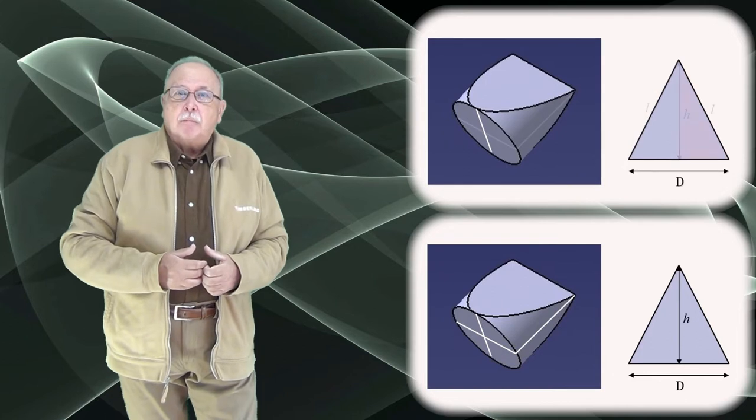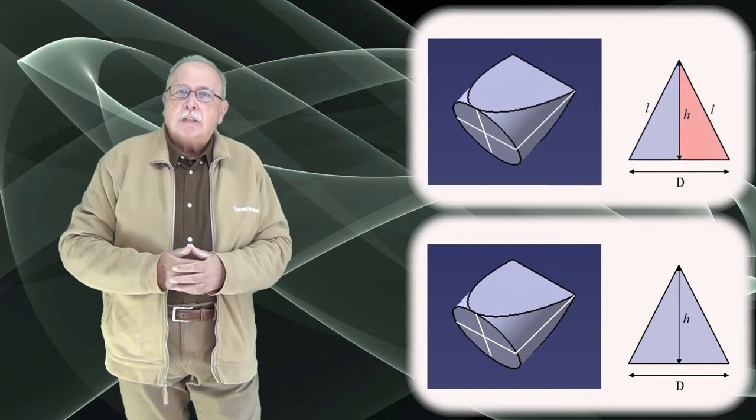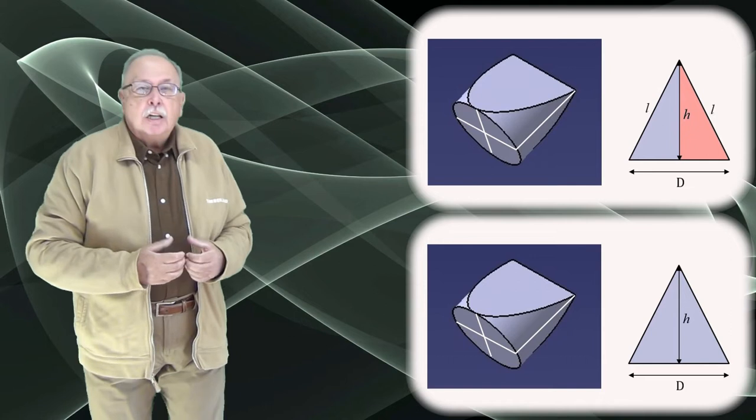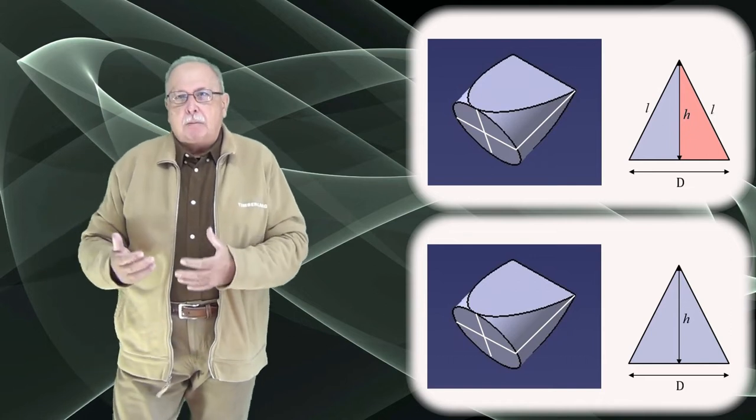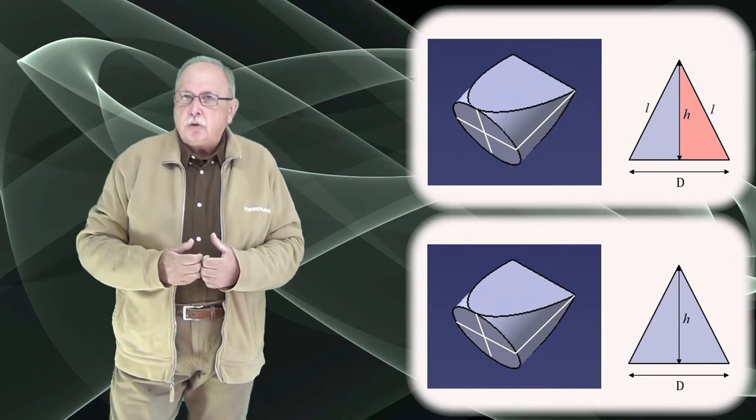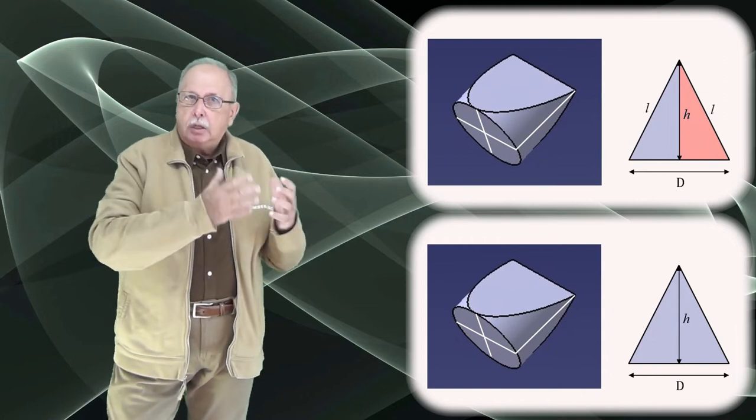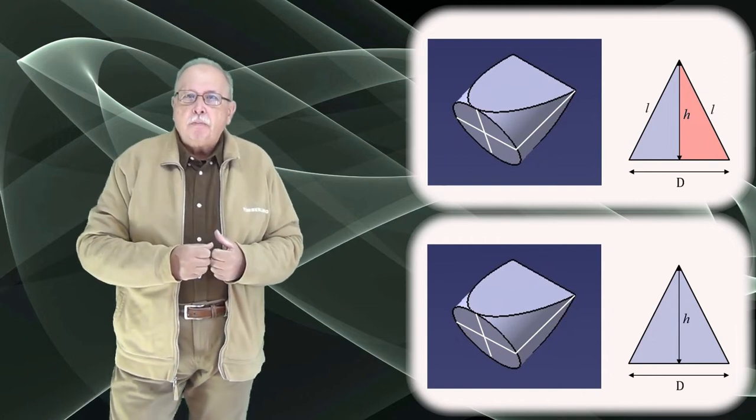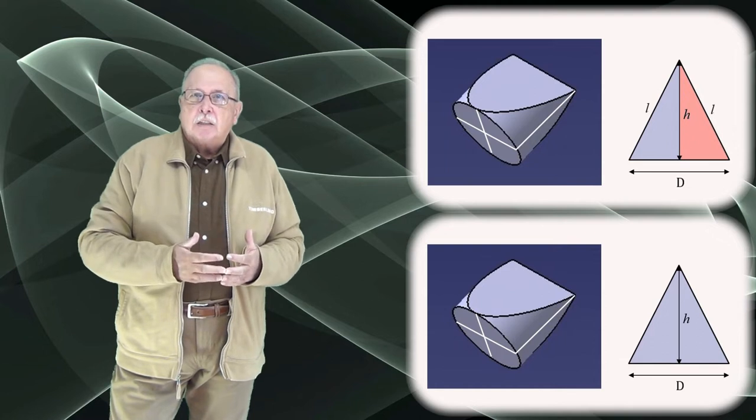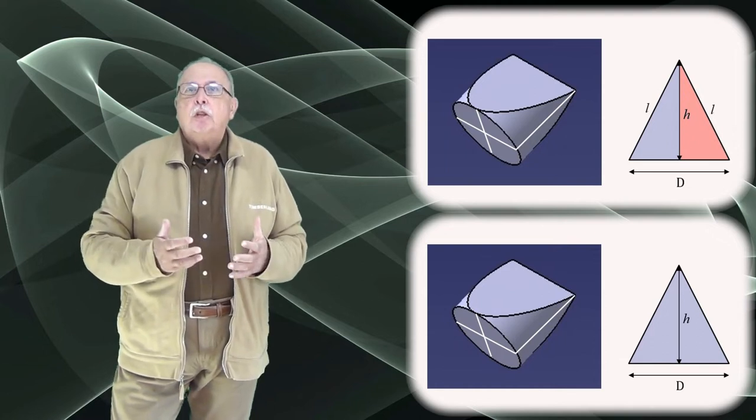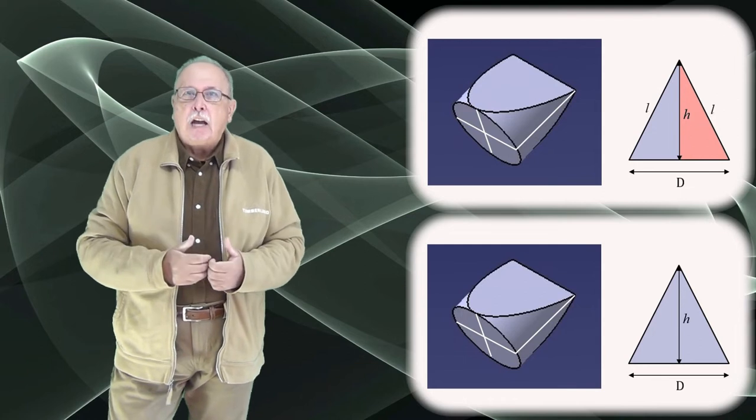Dar asta mai înseamnă că laturile triunghiului notate cu L nu pot fi egale cu diametrul cilindrului. Ele sunt mai lungi, pentru că, așa cum vedeți în triunghiul colorat în roșu, ele sunt ipotenuze în triunghiuri dreptunghice, în care diametrul cilindrului este o latură. Triunghiul poate fi, deci, isoscel, dar nu poate fi echilateral, dacă vrem ca una dintre umbrele să fie pătrat în condițiile descrise în întrebare.